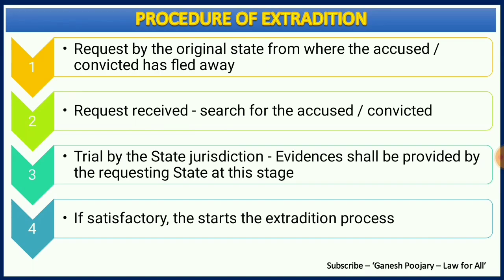The most important stage begins after finding the person — the accused or convicted is arrested, starting the third stage. This is the slowest stage: trial by the state's jurisdiction starts. If a person from India ran away to UK, the UK's court begins the trial and asks for all evidence from India. Only upon 100% satisfaction with the evidence does the last stage begin — the actual extradition process. When it comes to UK, this third stage is very slow, which is why Indian criminals keep running there.